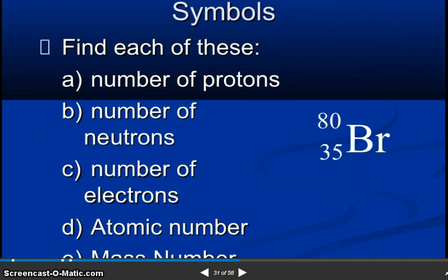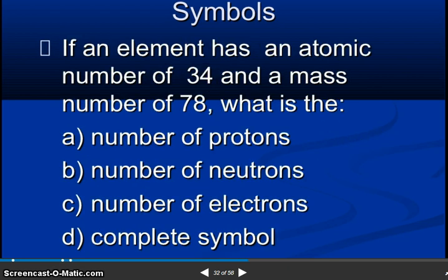So symbols. Find each of these: number of protons, number of neutrons, number of electrons, atomic number, mass number. So if an element has an atomic number of 34 and a mass number of 78, what is the number of protons, number of neutrons, number of electrons, and complete symbol?